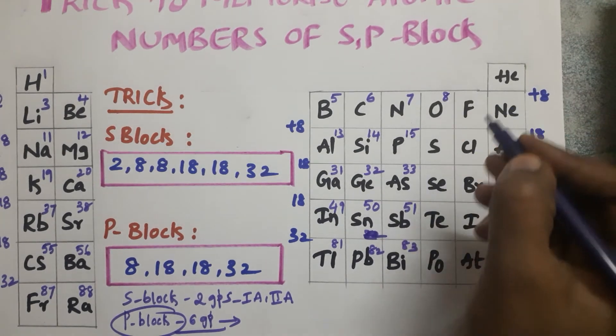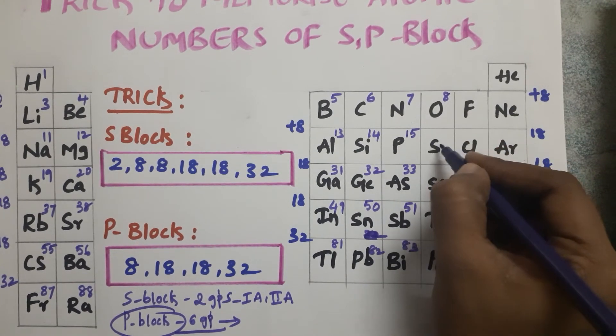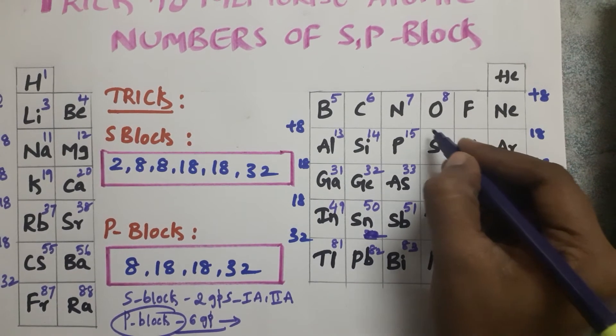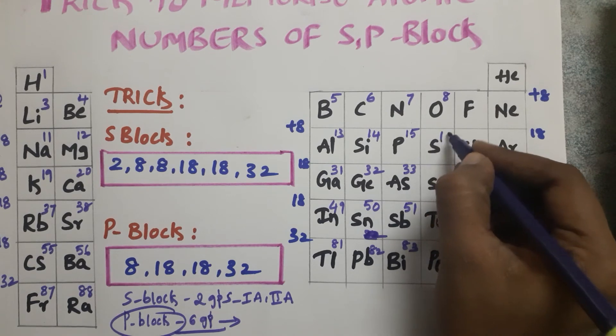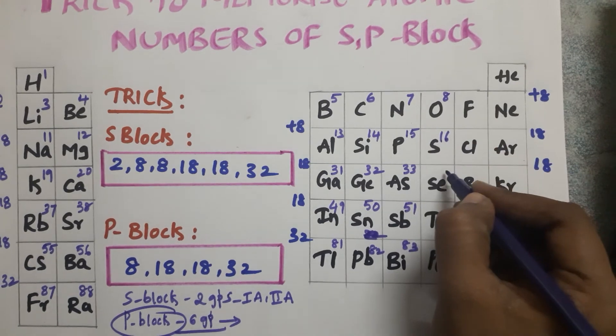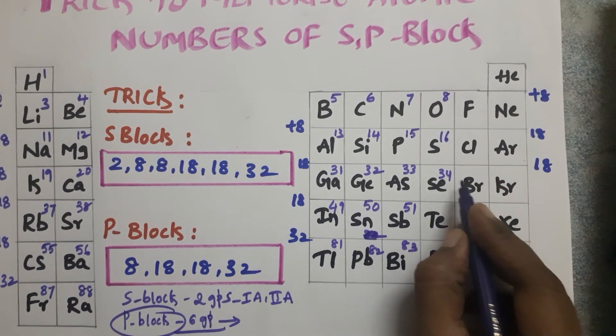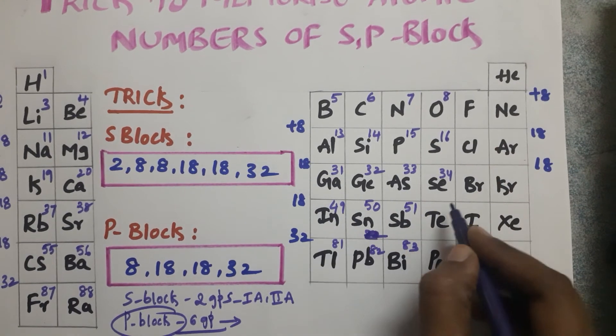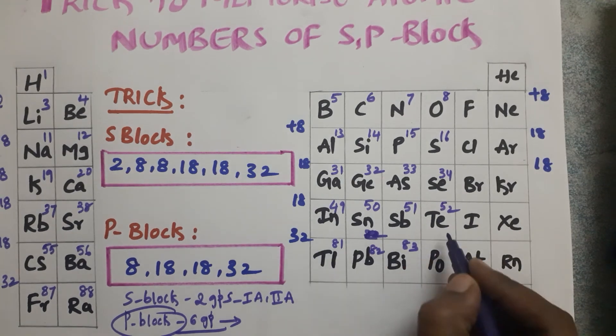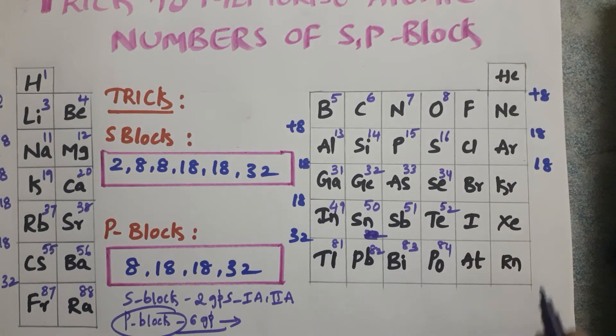Oxygen has atomic number 8. Then 8 plus 8 equals 16 (sulfur), 16 plus 18 equals 34 (selenium), 34 plus 18 equals 52 (tellurium), and 52 plus 32 equals 84 (polonium).